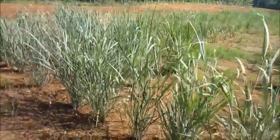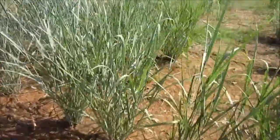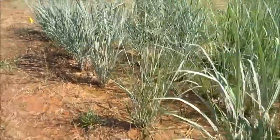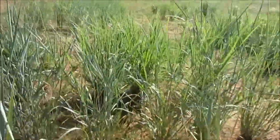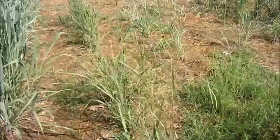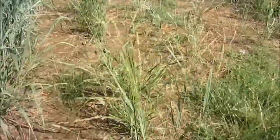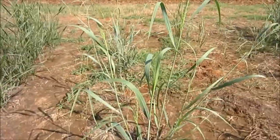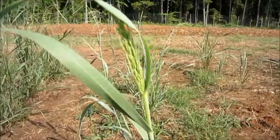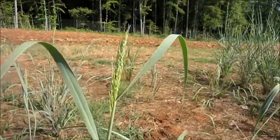Switchgrass is predominantly a cross-pollinated species that is gametophytic self-incompatible. A small percentage of self-pollination can sometimes occur. Open pollination of switchgrass is aided by wind blow. Switchgrass flower consists of branch inflorescence that bears a lot of seeds.